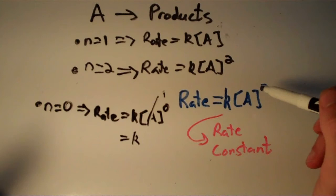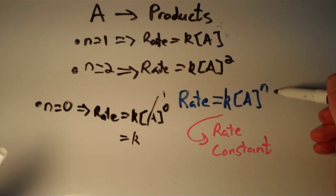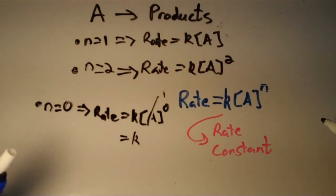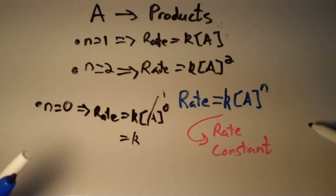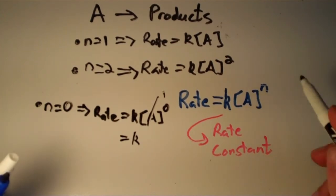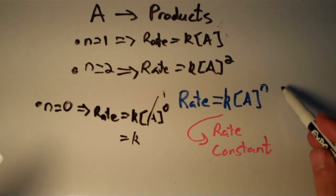I should also note that the value of n — the order with respect to reactant A — doesn't necessarily have to be an integer. It can also be a fraction, it could be negative, it could be the square root or cube root of something. So the order doesn't have to be just zero, one, two, or three; it can also be fractional or negative exponents.